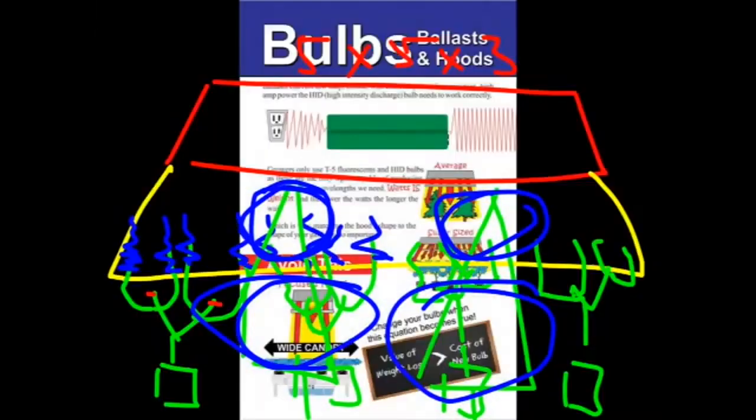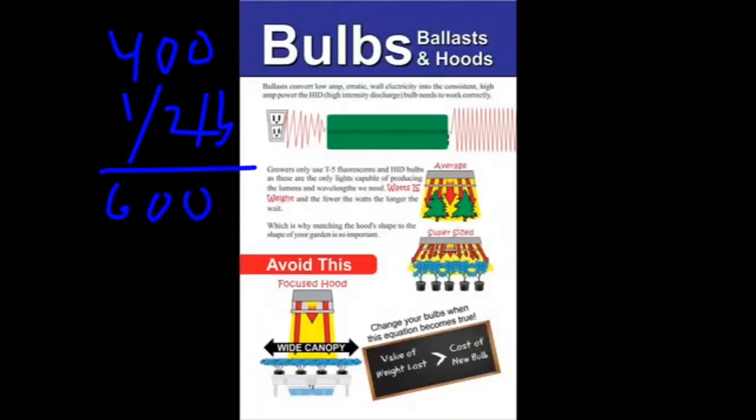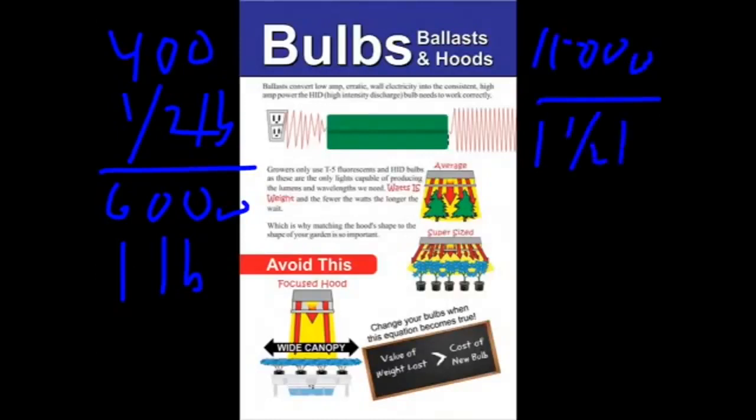I can't tell you enough how super important it is that a 400 watt light is going to get you one half pound, a 600 watt light is going to get you one pound, and a 1,000 watt light is going to get you one and one half pounds. If you're not getting these numbers, you have another problem. You've got to solve whatever it is that's going on to get to those numbers.